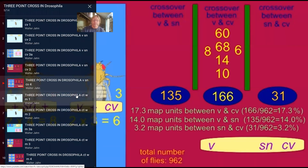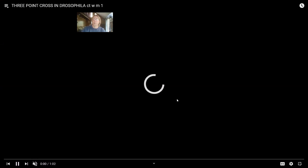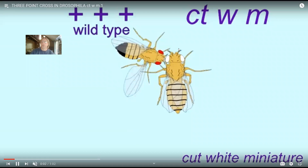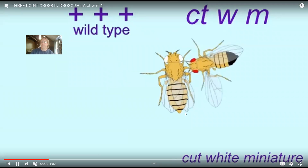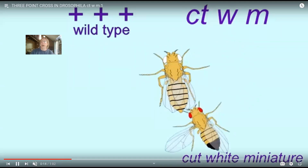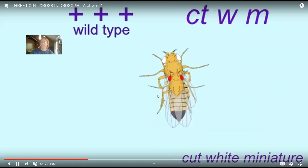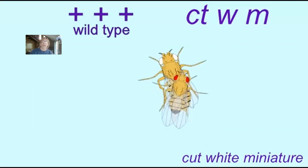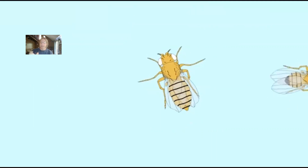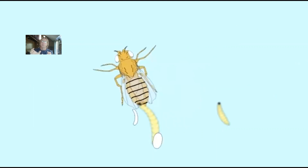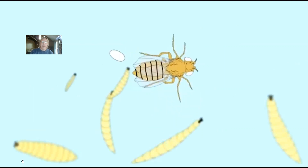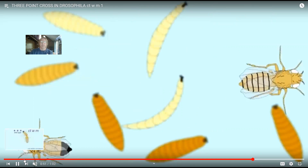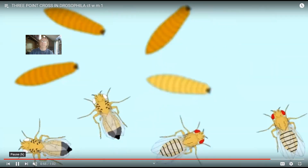Hearing this one time is typically not enough, so the playlist goes through another cross with three X-linked traits — cut wings, white eyes, and miniature wings — following all the same steps. This was an overview of how one does a three-point cross in Drosophila, at the result of which you can say: I know which genes are on the ends, which is in the middle, and the map units that separate them. Once you know where a gene is, you can ultimately get its sequence and ask whether humans have a version of it.